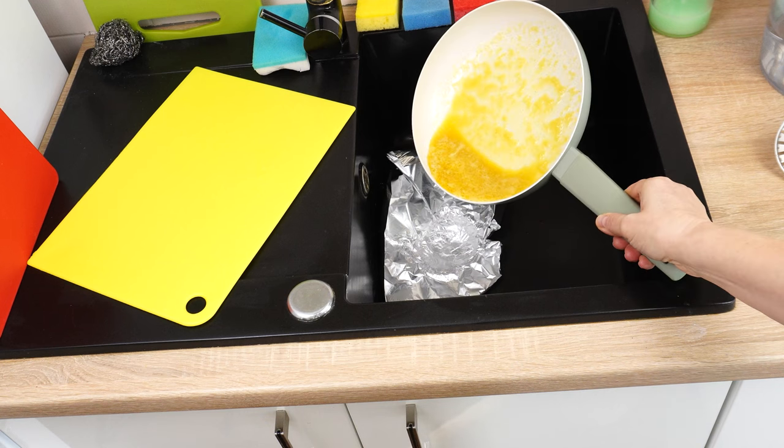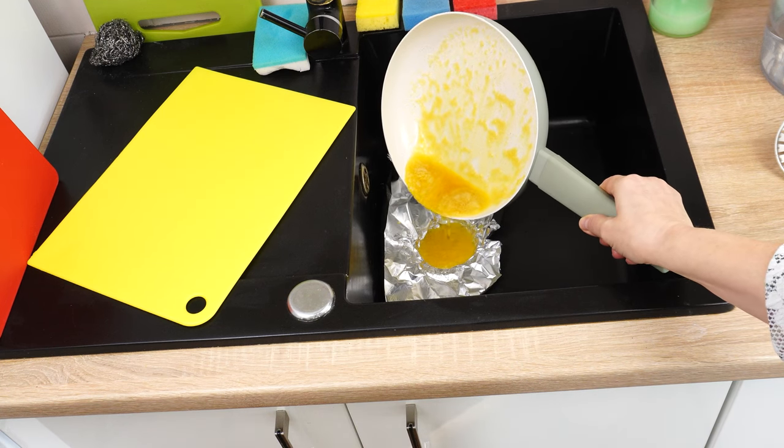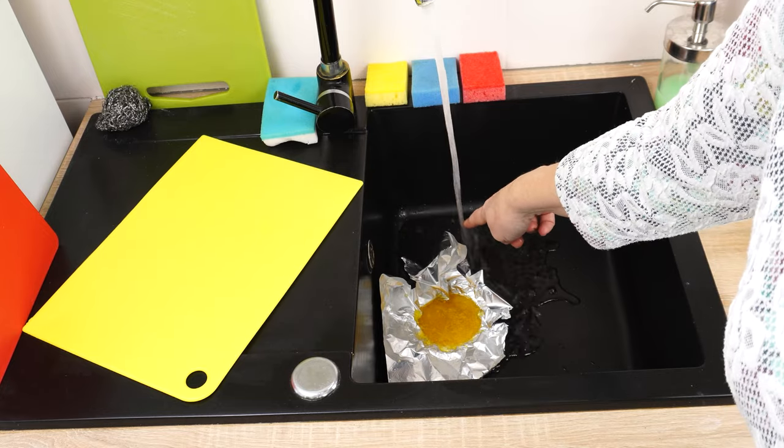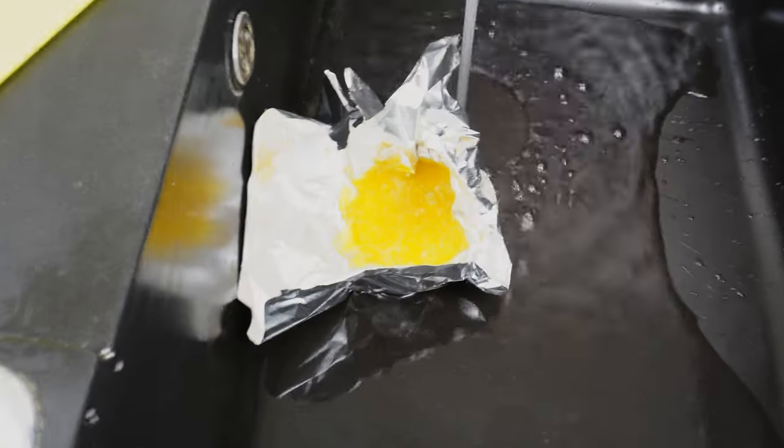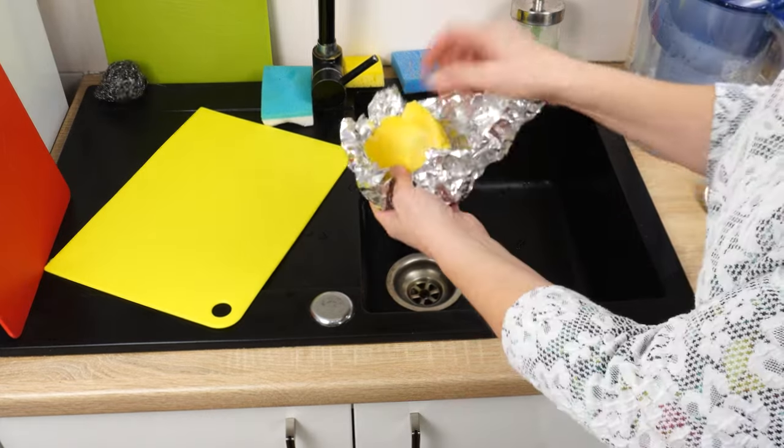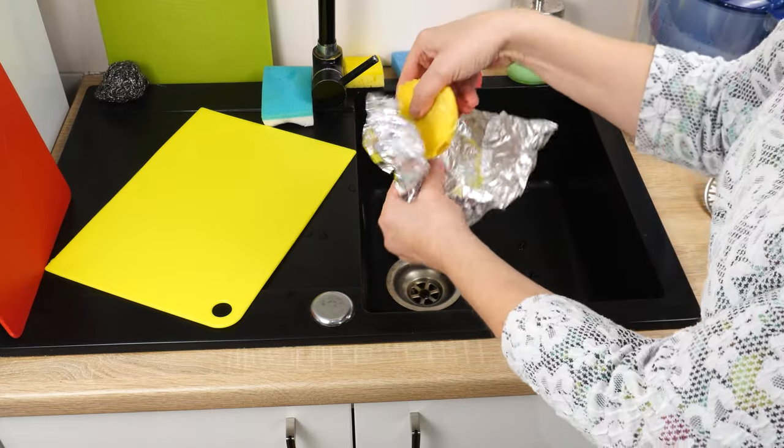Pour the leftover fat from lunch into the foil depression and run cold water. The water should flow under the foil. It shouldn't flow onto the fat. This will help the fat cool down faster. After a while, you can remove a solid piece of fat from the foil.